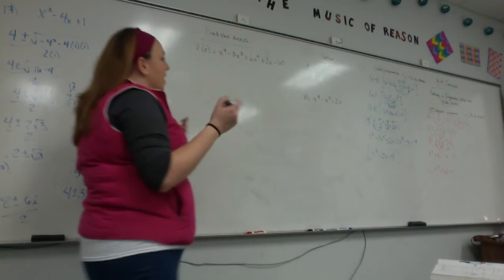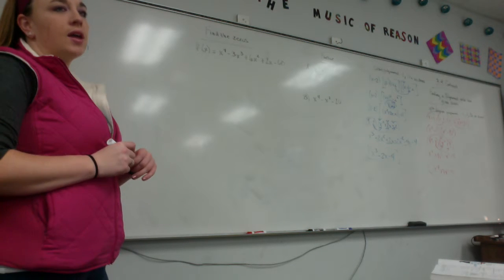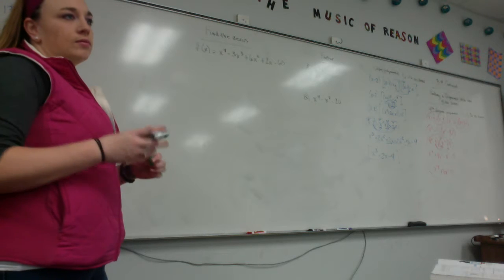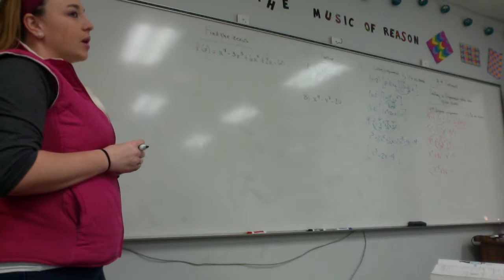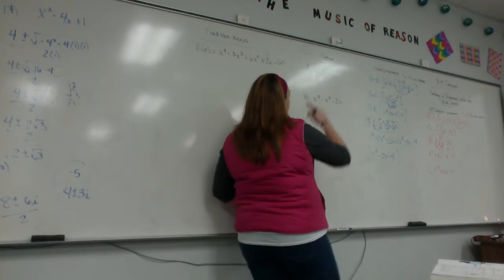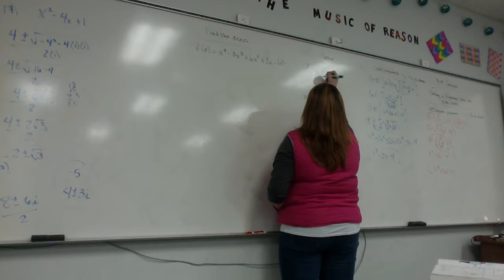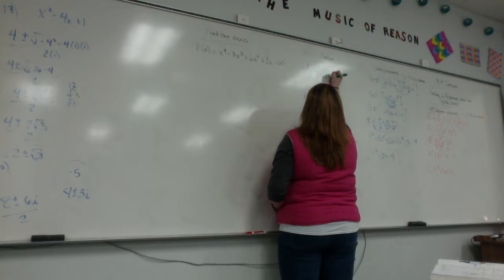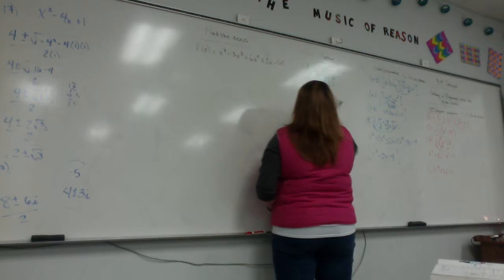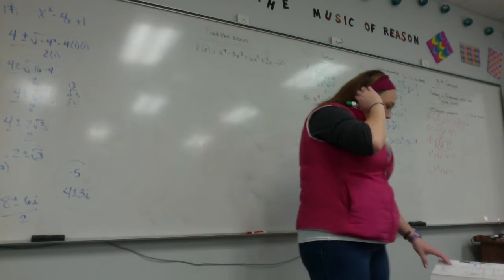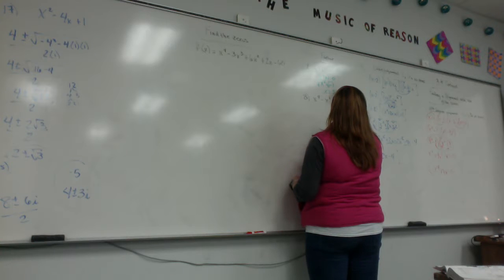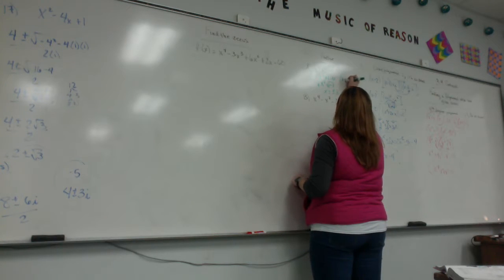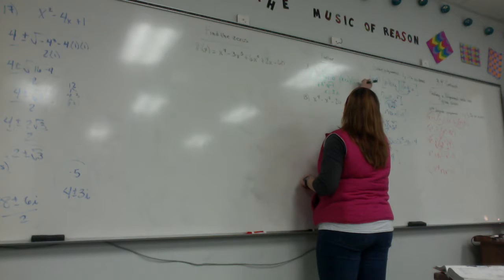Now we're talking about factoring. Let's say it gives you x squared plus 1 — I want you to factor that. You can. If I can't factor this traditionally, I'm going to set it equal to 0 and solve. x squared plus 1 equals 0, so x squared equals negative 1. Take the square root of that — when you take the square root of negative 1, it's imaginary. You get x equals plus or minus i. So to factor this, you should have x plus i and x minus i.